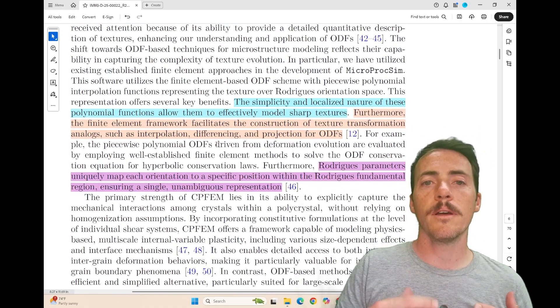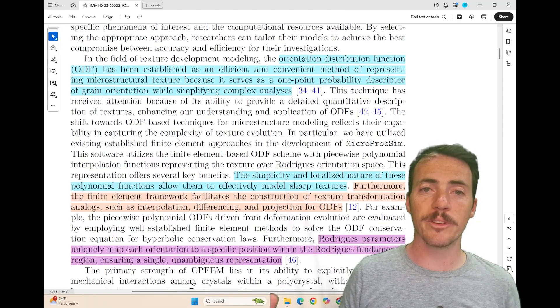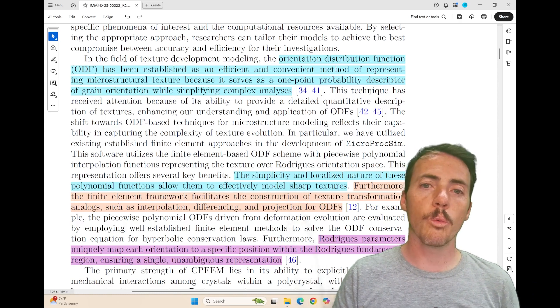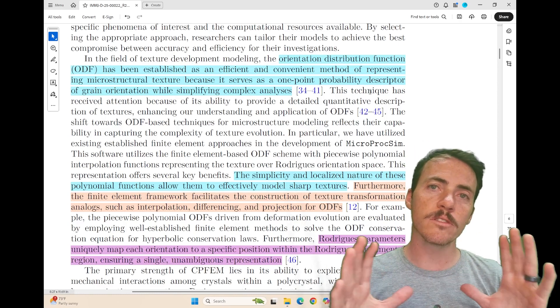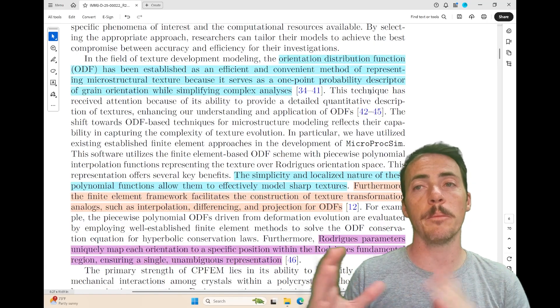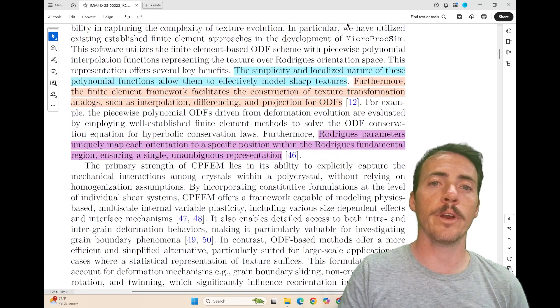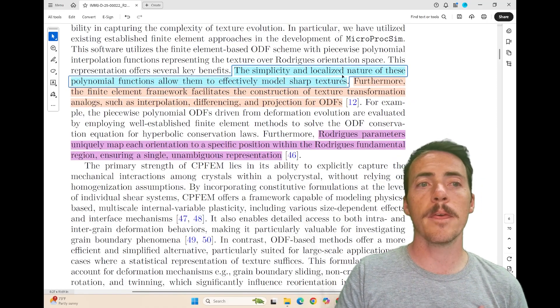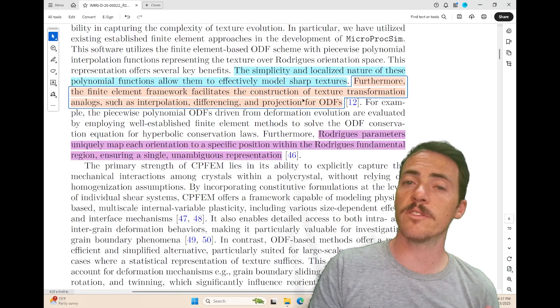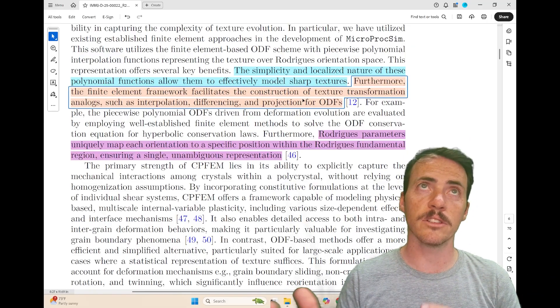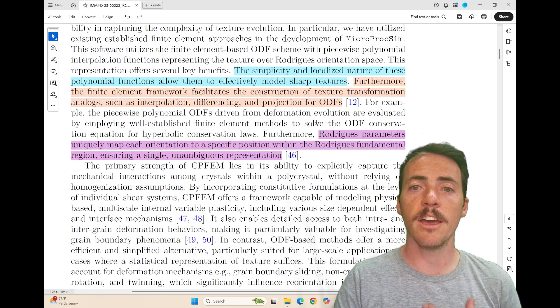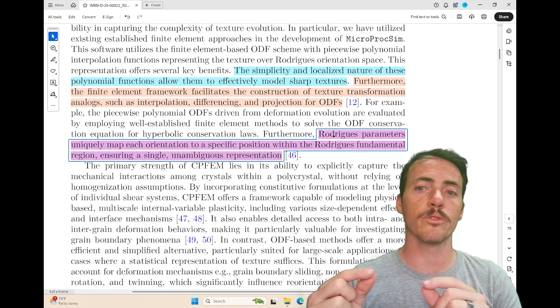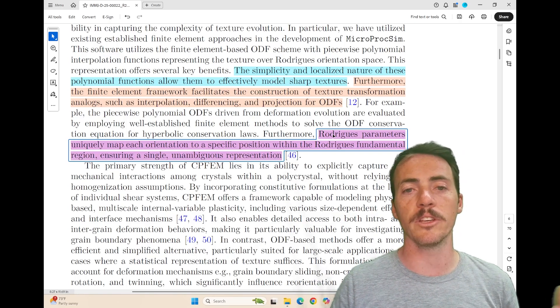Why do they like that? Well, for one thing, they like it because it's a convenient method to representing the structure. It's a one point probability descriptor that simplifies complex analyses. In other words, we're not going to track every single grain. We're going to use this overall representation of the structure and use that to model how materials change under different mechanical loads. They point out that the simplicity of localized nature of these polynomial functions lets them effectively model sharp textures. It points out that the finite element framework facilitates the construction of texture transformation analogs, just like interpolation, differencing, and projections. And finally, that the Rodriguez parameters uniquely map each orientation to a specific position in the Rodriguez fundamental region. So you end up with an unambiguous representation.